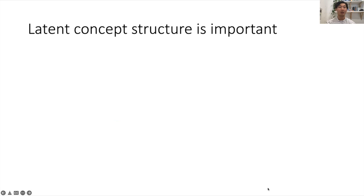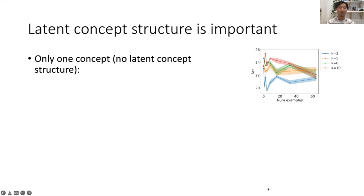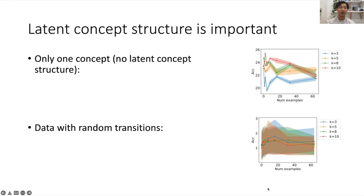We find that the latent concept structure from our theory is important. When the pre-training distribution only has one latent concept, then in-context learning fails to emerge. And for data with random transitions where the model has seen all possible token transitions, it's not able to put them together at test time to do in-context learning.